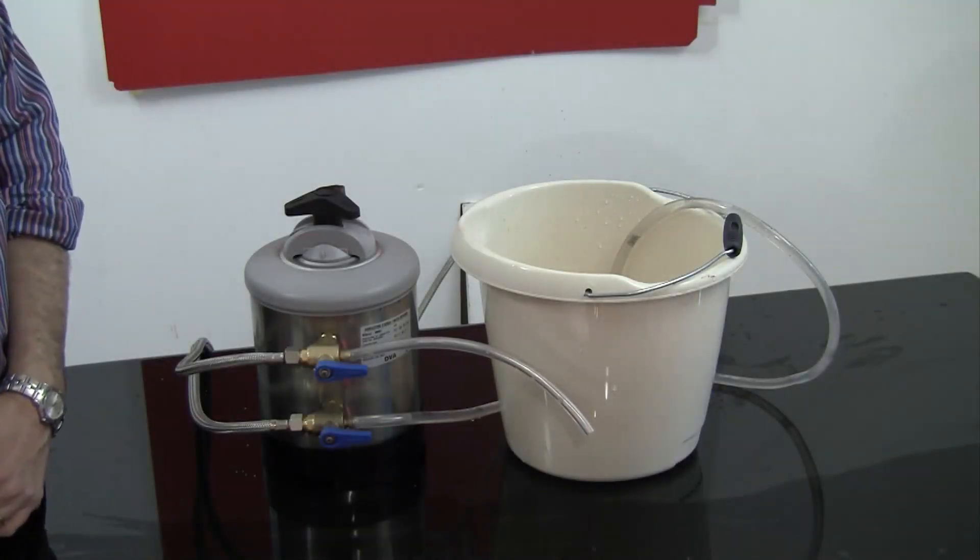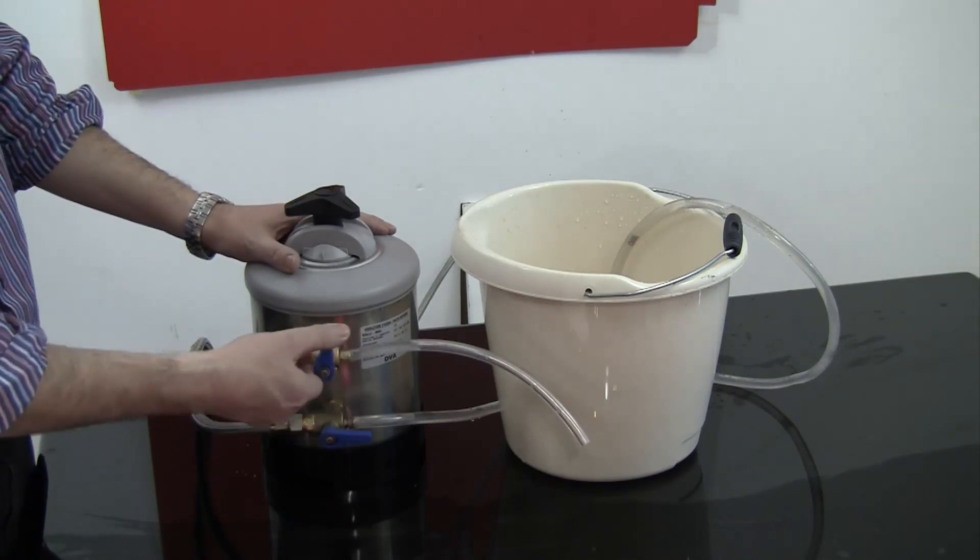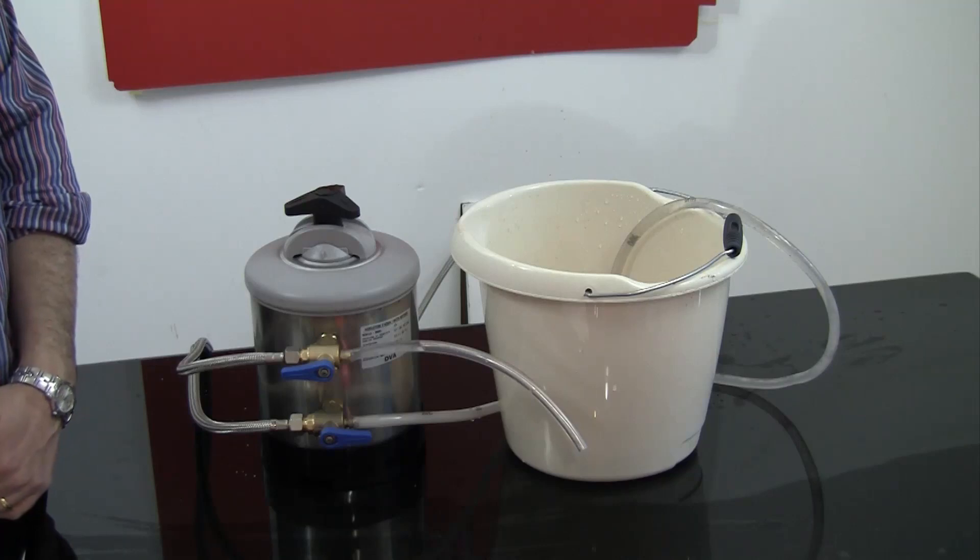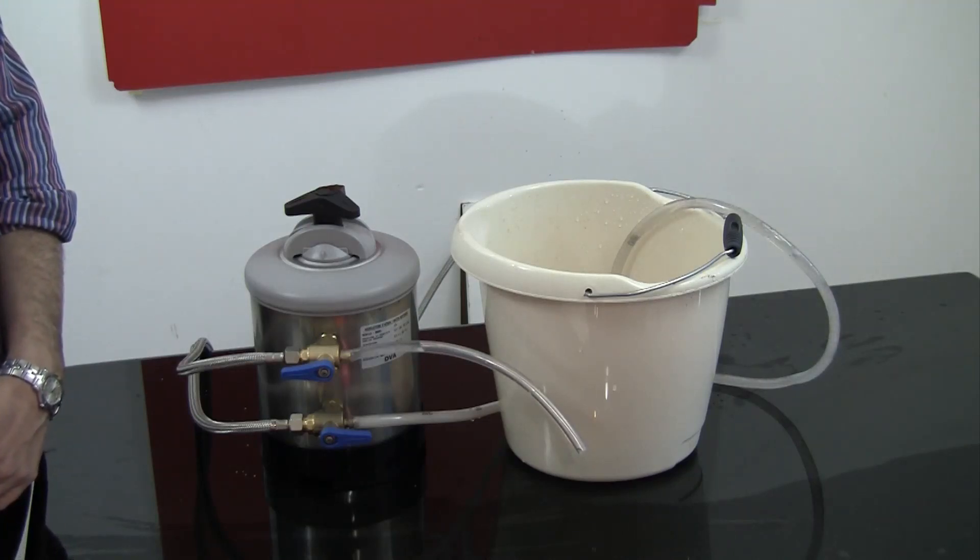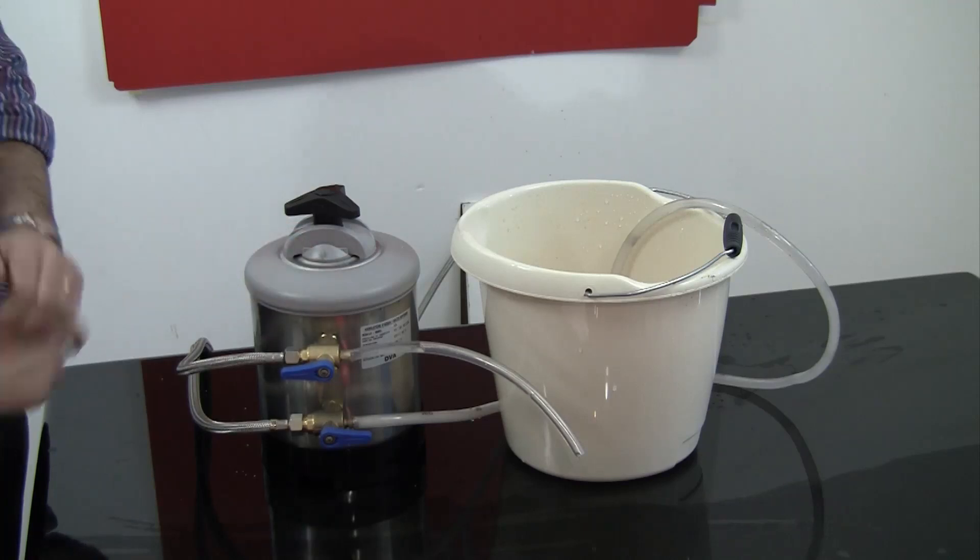Step 7 is to turn the top tap anti-clockwise so the tap is pointing towards the 9 o'clock position. This pressurises the unit and flushes the salt through the unit to clean the calcium from the resin. Check for any leaks around the lid.